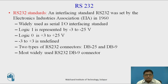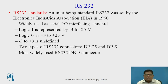In this standard, minus 3 to plus 3 volts is undefined. The RS-232 standard comes in two types of connectors: one is called the DB25 and the second one is called the DB9 — D-type connectors with 25 and 9 pins respectively.